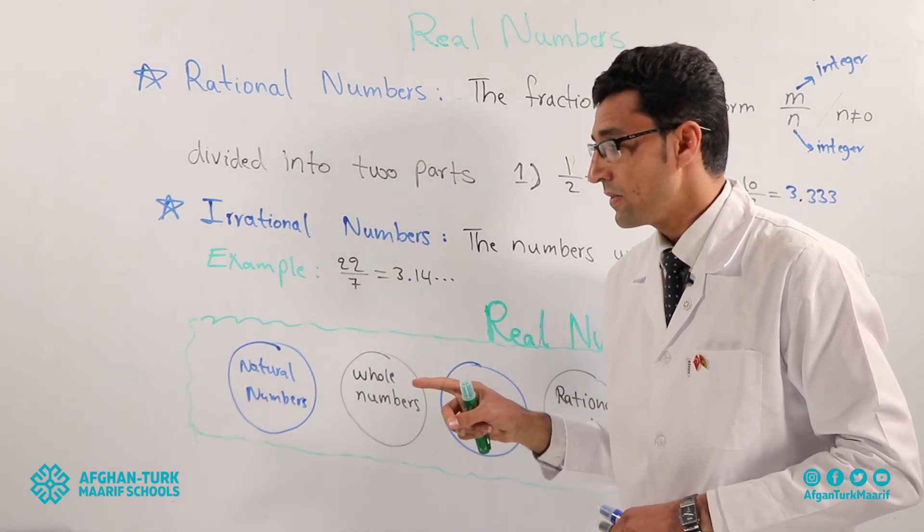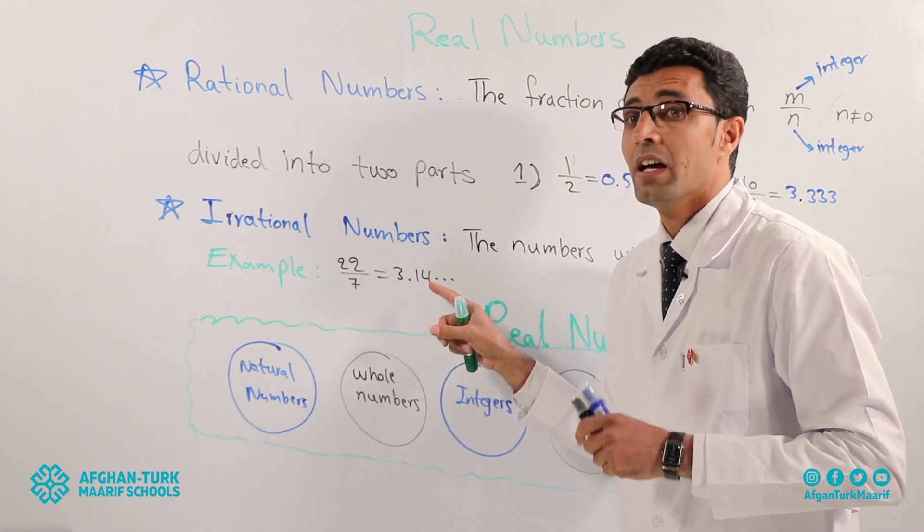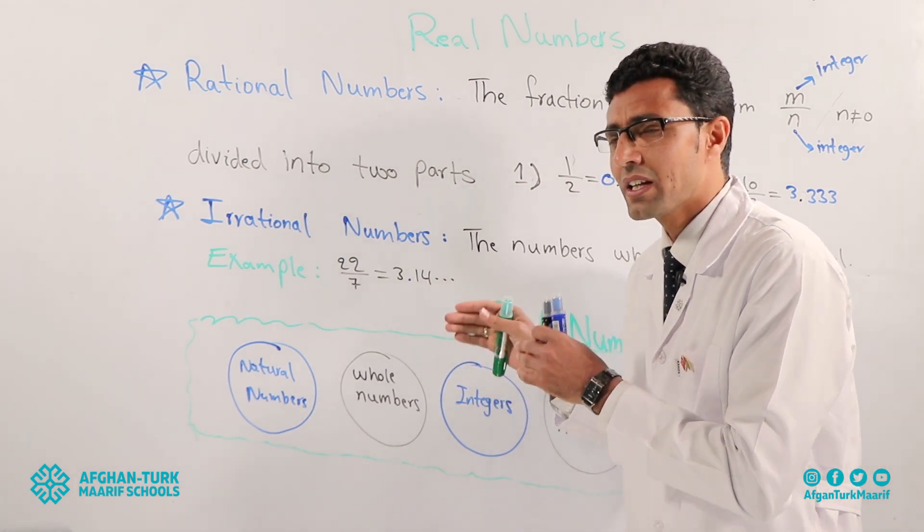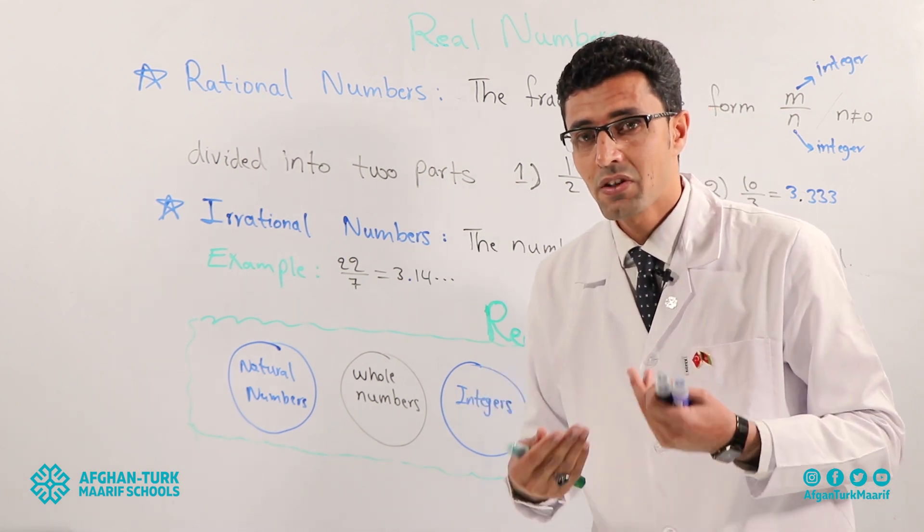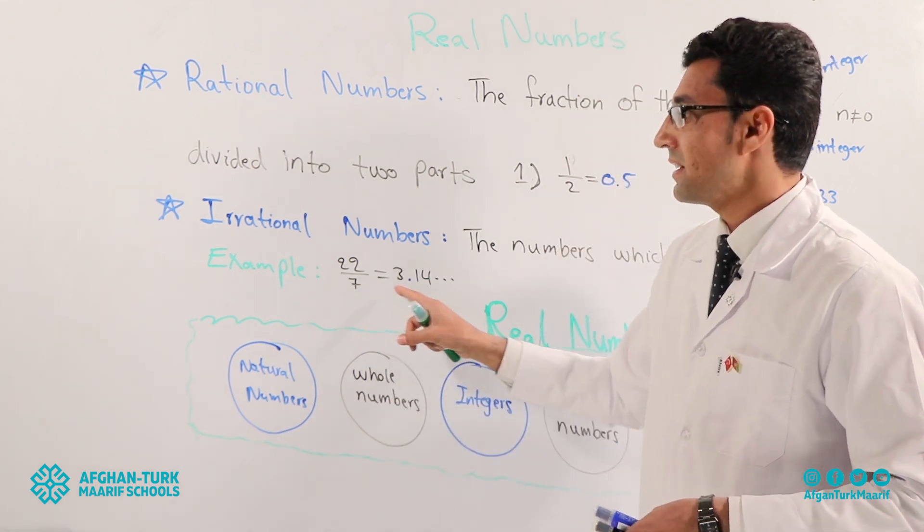An important point. Listen. And look. 22 divided by seven is three point one four. After four we continue, continue, continue. It is not clear. So we call it irrational.